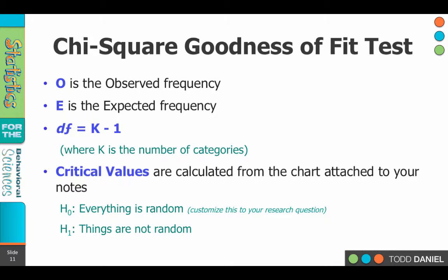Here are some definitions we'll want to know. We'll use the letter O to stand for observed frequencies — that's what we actually find in our sample. E will be the expected frequencies — that's what we would have found if everything was occurring randomly. The degrees of freedom is k minus 1, where k is the number of categories. So if we have six types of soda, the degrees of freedom would be five — k minus 1 is 5. The critical values are calculated from a chart attached to the back of your notes, where we can look up the critical value for an alpha of 0.05 with five degrees of freedom.